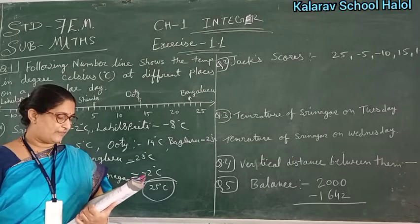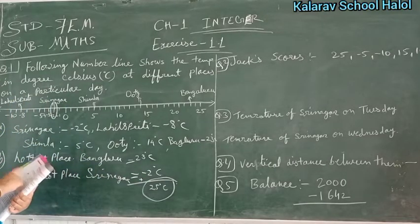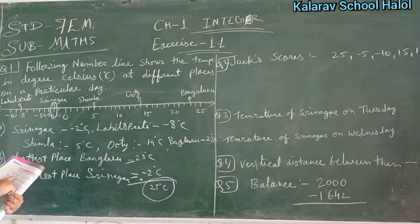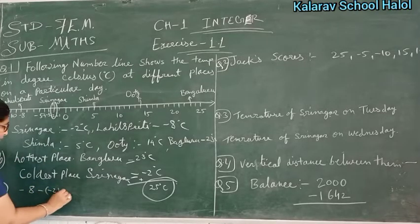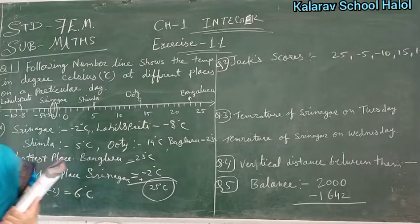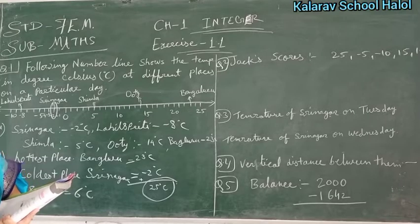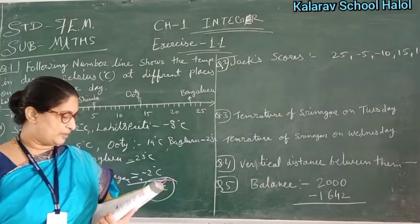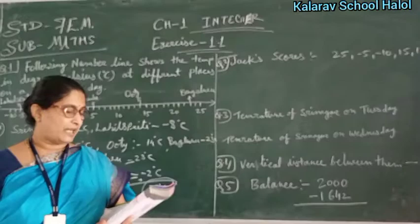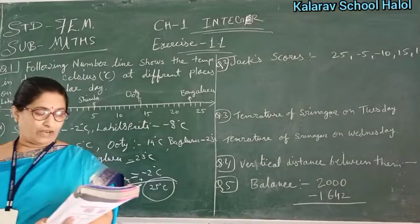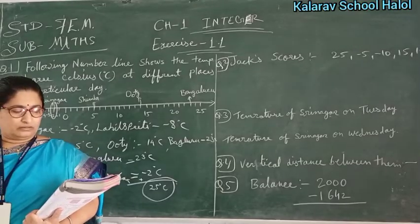Question C: Difference between Lahul Spiti at minus 8 and Srinagar at minus 2. Minus 8 and minus 2 gives 6 degree difference in minus. Then, can you say the temperature of Srinagar and Shimla taken together is less than the temperature at Shimla? Srinagar has minus 2 while Shimla has 5 degree temperature, so Srinagar is less.